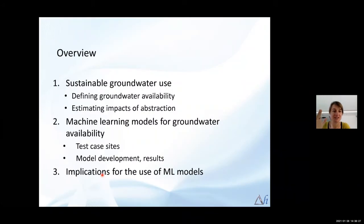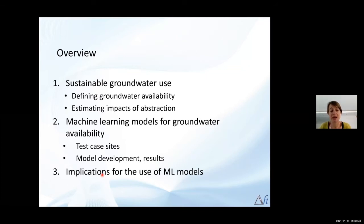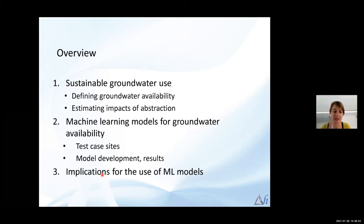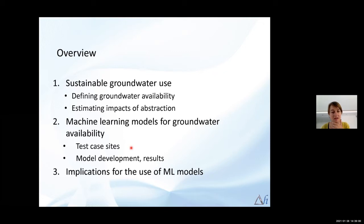So leaping into what I'm going to talk about: first I'll give some background on definitions for sustainable groundwater use and how we define groundwater availability and how we estimate the impacts of abstraction — because it's those impacts that dictate groundwater availability. We need to understand that in order to understand the particular problem we were trying to solve with machine learning models. Then we'll go through the test sites, how the models were set up, the results, and what those results imply for using machine learning in groundwater science.